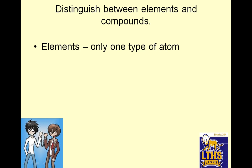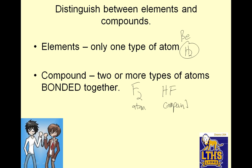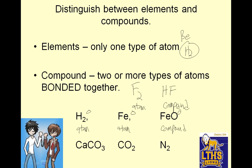Distinction between elements and compounds. Elements: only one type of atom. So that means it could be beryllium, or it could be H2 — that's called an element even though there's two of them and they're diatomic. Compound: two or more types of atoms bonded together. So while F2 is an element, HF is a compound. Hydrogen would be an element. Iron by itself would be an element. FeO would be a compound — notice all of these are chargeless. Calcium carbonate: compound. Carbon dioxide: compound. And N2 would be an element — tricky, two things, but the same thing.